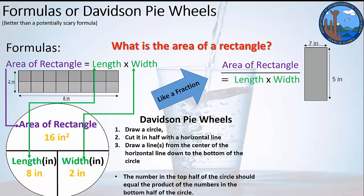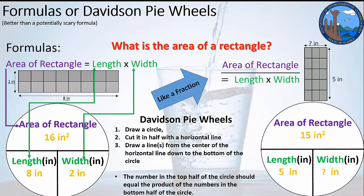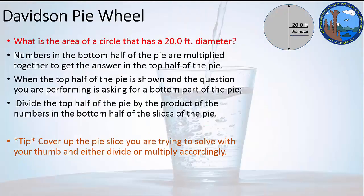We're going to do another rectangle scenario. We've got a five inch length on this rectangle. We don't know the width. And so what we're going to do is draw in the grid pattern so you could count them up and know exactly what that number needs to be. But if we stuck it into a Davidson pie wheel, we'd have the area of the rectangle on the top. We'd have the length on the bottom as well as the width. We could put our thumb over the width and cover that up, and then we just know that since this is a division line, we can divide 15 by 5 to get that answer. So 15 divided by 5 is 3 inches.